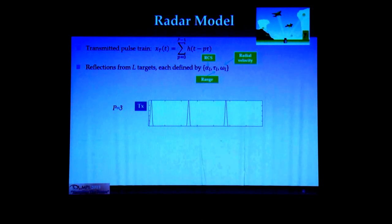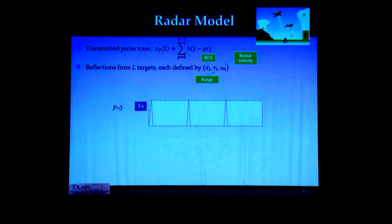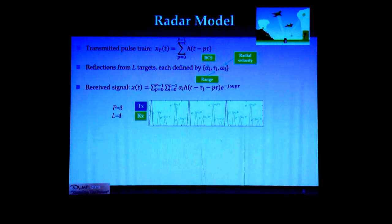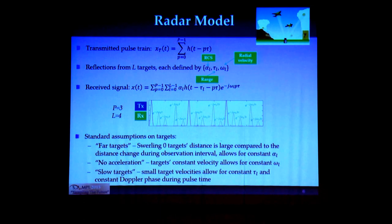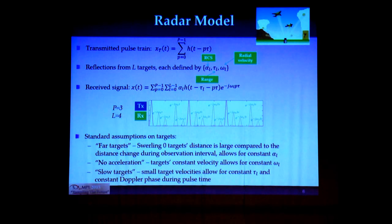For the radar model, we're working with a pulsed Doppler radar, which means we transmit a uniformly spaced pulse train. These pulses are reflected off L targets, where each target is defined by three parameters: a delay tau, a Doppler frequency omega, and an amplitude alpha. The received signal can be written in this form, and it has 3L degrees of freedom which completely define it. We assume the transmitted pulse shape is known by the receiver. To write the signal this way, we make some standard assumptions on target range and dynamics.